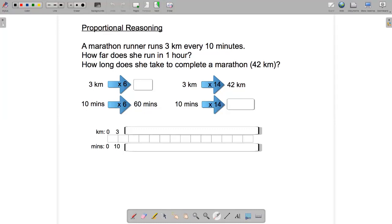So for the first problem, we have a marathon runner who runs three kilometers every 10 minutes. How far does she run in one hour? And how long does she take to complete a marathon, which is approximately 42 kilometers?